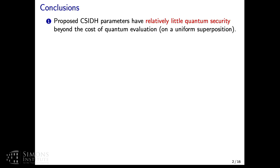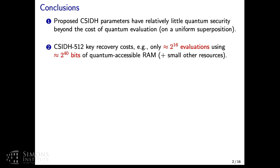So I'll start with the conclusions, just the bottom line and what this is all about. The talk and the work is about the concrete cost of Kuperberg algorithm on various CSIDH parameters that have been proposed. The top line conclusion is that the parameters that were proposed are offering you relatively little quantum security beyond the cost of quantumly evaluating the group action itself on a uniform superposition.